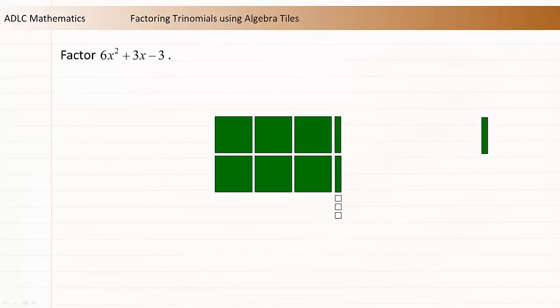How about changing the orientation of the negative 1 tiles? Again, try to use the x tiles to complete a rectangle. Again, this looks like another failed attempt. Ah, I see something.